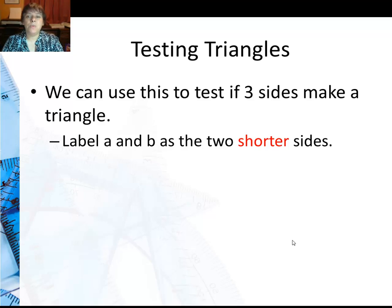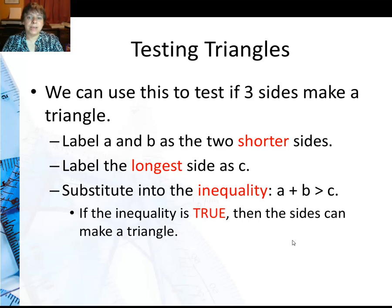So we can use this to test to see if three sides can make a triangle. First of all, we're going to label a and b as the two shorter sides. We're going to label the longest side as c, and we're going to substitute into the inequality that the two short sides must be greater than the longest side.